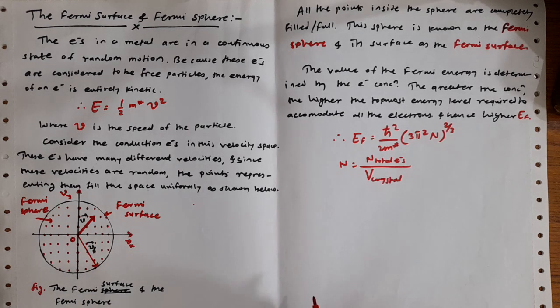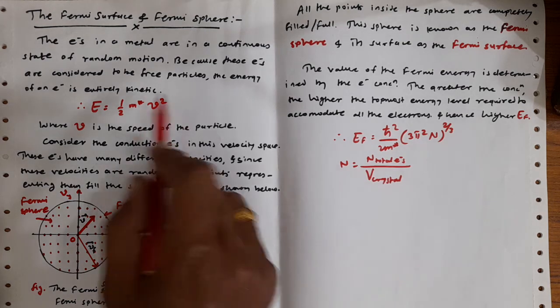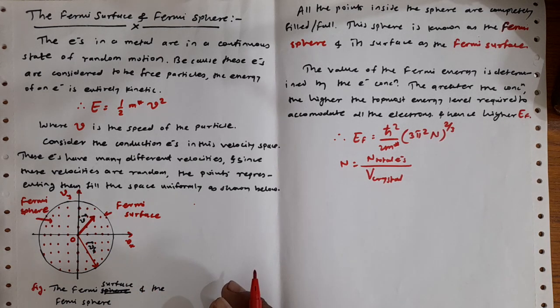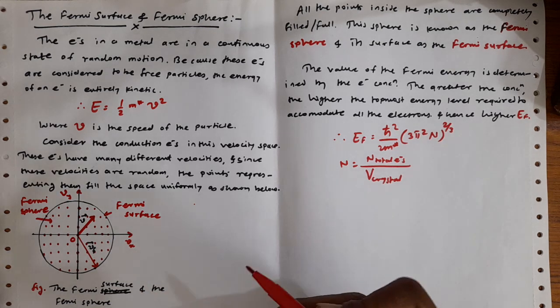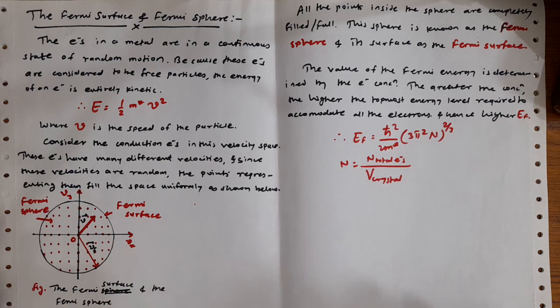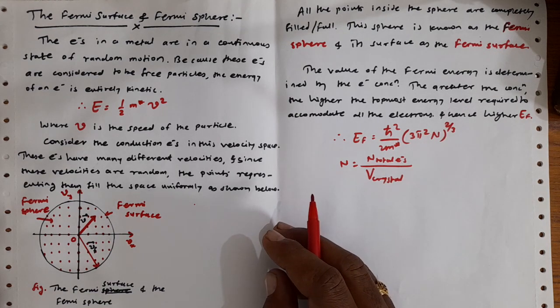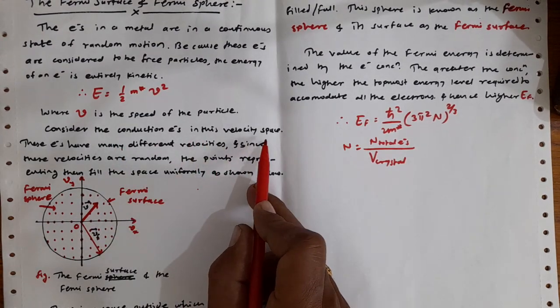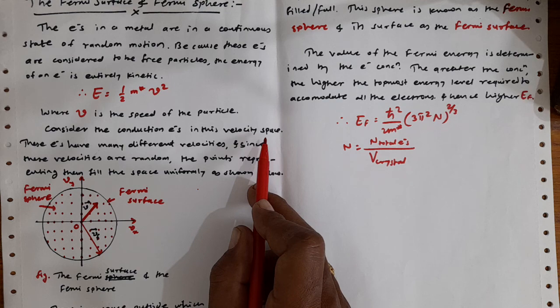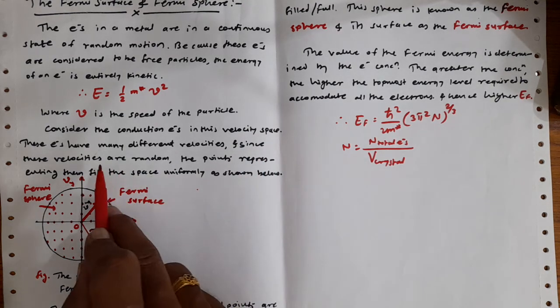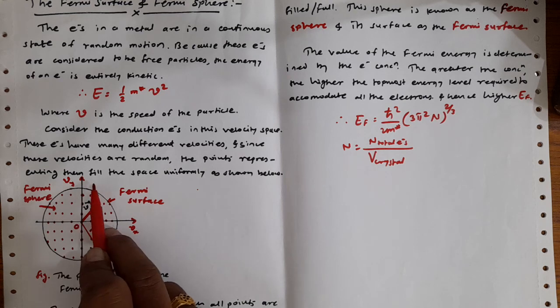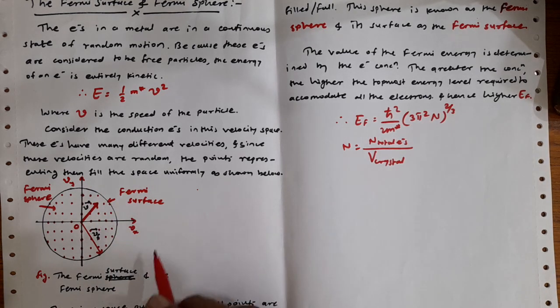Now let us try to introduce the concept of velocity space. We will be considering this equation and v is acting as our variable. Obviously this velocity is a vector quantity, so they will be having three different axes: vx, vy, and vz. So each point in this space, each point within this velocity space actually represents a unique velocity both in magnitude as well as in direction. Now let us consider the conduction electrons in this velocity space.